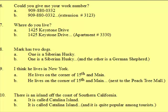Six: could you give me your work number? Nine, zero, nine, eight, eight, zero, zero, three, three, two. Seven: where do you live? Fourteen, twenty-five, Keystone Drive, eight. Eight: Mark has two dogs. One is a Siberian Husky. Nine: I think he lives in New York. He lives on the corner of 15th and Main. Ten: there is an island off the coast of Southern California. It is called Catalina Island.